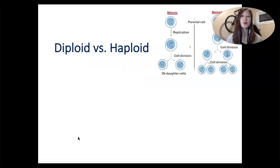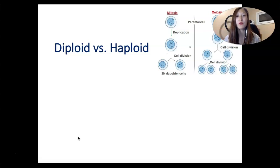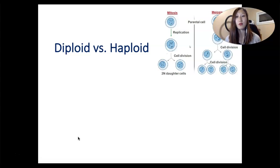Starting with the difference between diploid versus haploid. A diploid cell is what's usually in your body as your somatic cells. Most of your cells are actually diploid cells, meaning that there are two sets of chromosomes. Why are there two sets? Because you get one set of chromosomes from your mother and one set from your dad, so together you have two sets of chromosomes that determine everything going on in your body. That's a diploid cell.